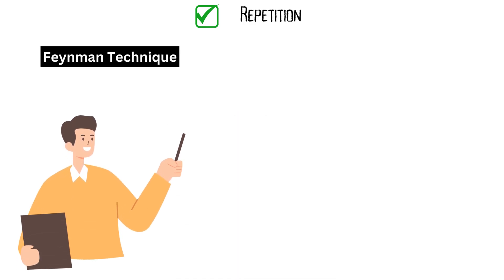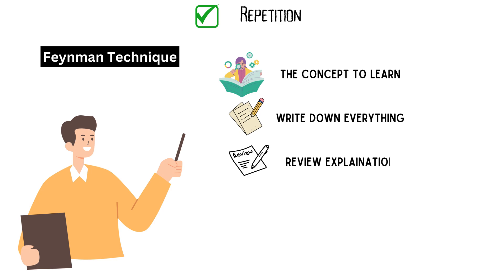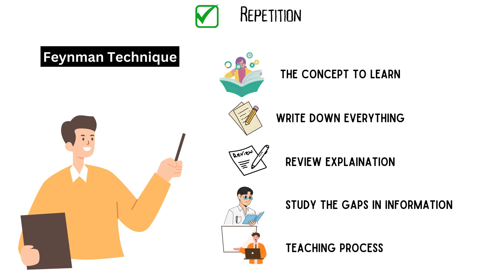To apply the Feynman technique, start by choosing a concept you want to learn. Write down everything you know about the topic as if you were teaching it to someone with no background knowledge. Then review your explanation and identify any gaps or areas of confusion. Study those areas further and repeat the process until you can explain the concept clearly and confidently.